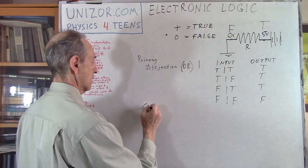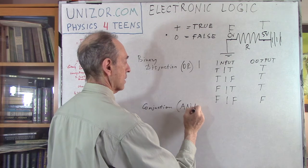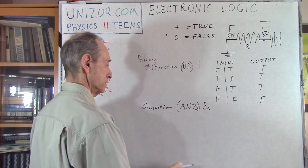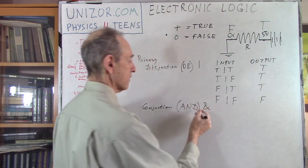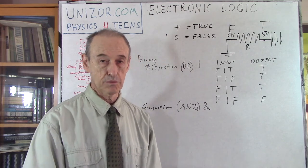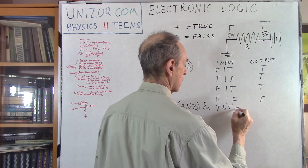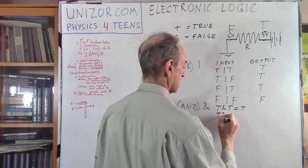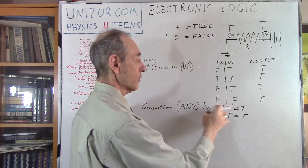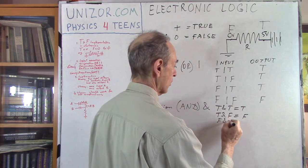Conjunction is logical AND, represented as an ampersand. The result is true only if both inputs are true: true AND true gives true; true AND false gives false. Only if both this and this are true will the result be true — it is false in all other cases.